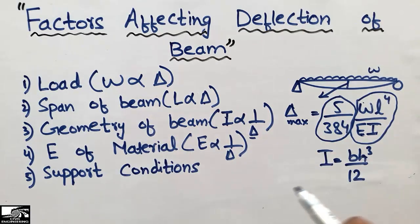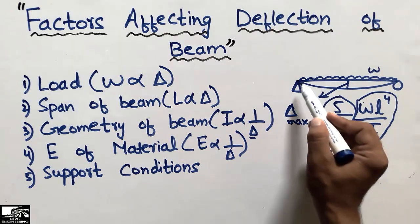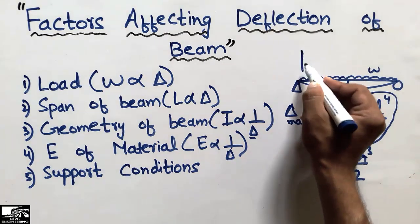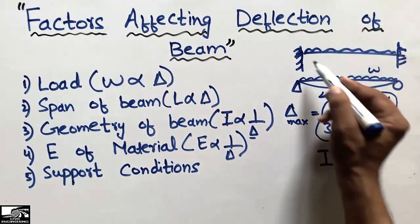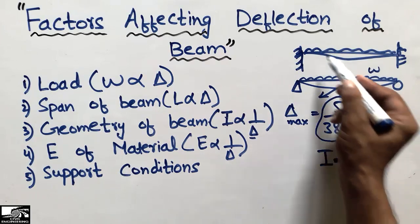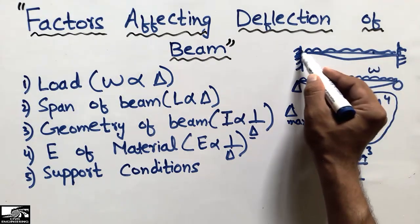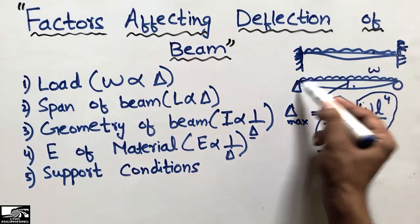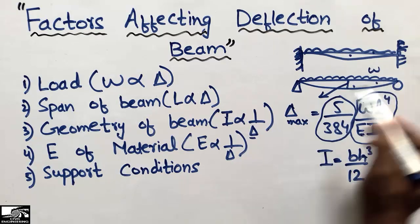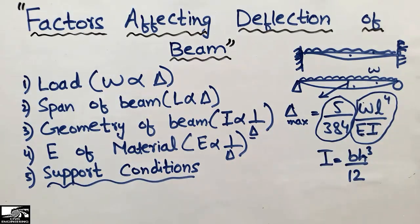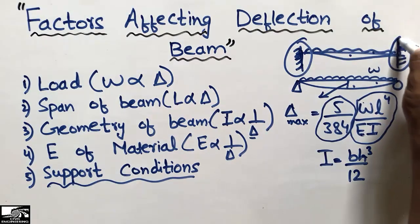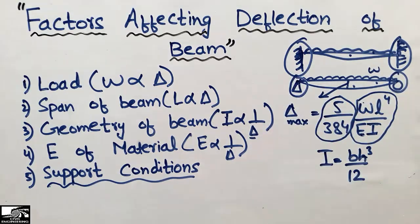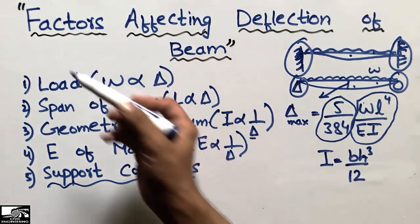The fifth factor, not directly in the formula, is the support conditions. For example, a simply supported beam with hinge and roller supports will show more deflection than the same beam with both ends fixed under the same loading and same length. Fixed support conditions result in less deflection, while hinge and roller support conditions produce more deflection.